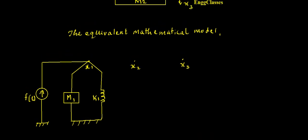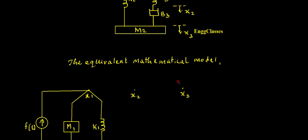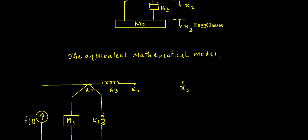Between x1 and x2 or at x2, there is no mass as such — no independent elements. Between x1 and x2 there is the spring constant k3, so I need to draw that between x1 and x2. I am going to call it as spring constant k3. At x3 there is mass m2 — that is the only element at node x3. So I am going to consider sketching mass m2 at x3.